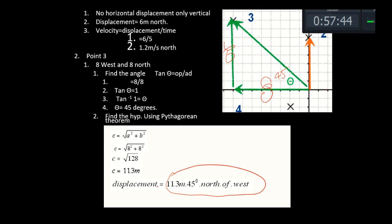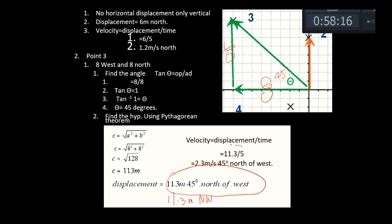The displacement is 45 degrees north of west. This is actually the only time you can simply say 'northwest,' because 45 degrees is the unique case. So you can say 11.3 meters northwest. For velocity: 11.3 meters in five seconds gives 2.3 meters per second, 45 degrees north of west — or simply 2.3 meters per second northwest.